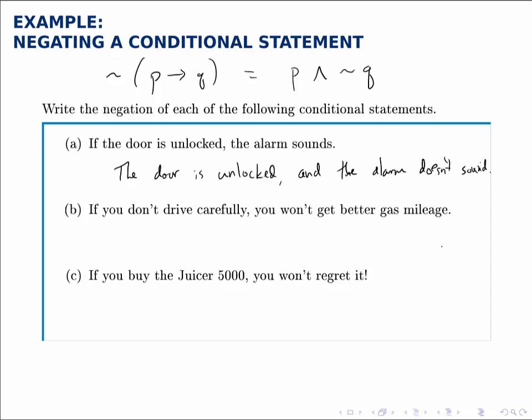Similarly, for part B, if you don't drive carefully, that's P and the negation of Q. So if Q is you won't get better gas mileage, the negation of that would be you do get better gas mileage or you will get better gas mileage.